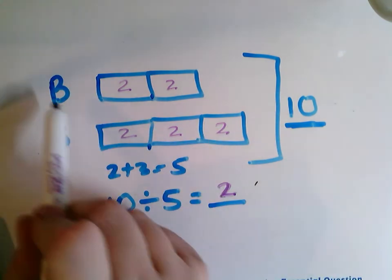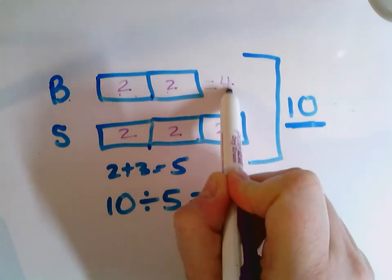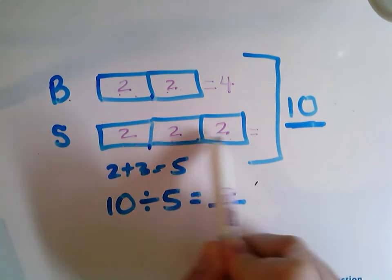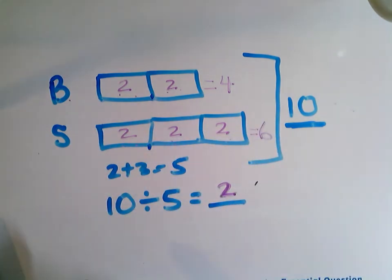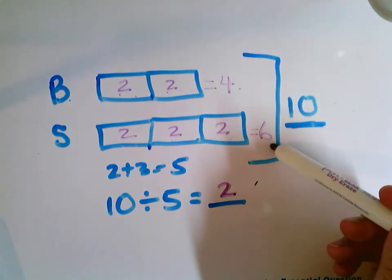So now I can see, well, my blueberries have two groups of two. Two plus two, that's four. And my strawberries have three groups of two. Two plus two plus two, that's six. So here I have four blueberries and six strawberries in my bowl.